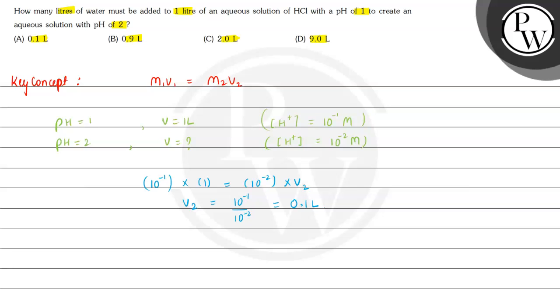Option A says 0.1 liter of water must be added to 1 liter of an aqueous solution of HCl, so that it will create an aqueous solution with pH 2, whereas the previous pH was 1. This is the final answer. I hope you understood the explanation, all the best.